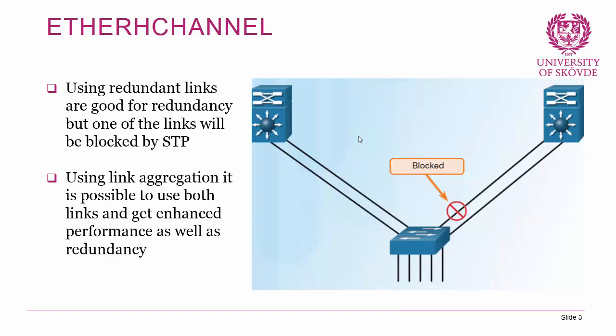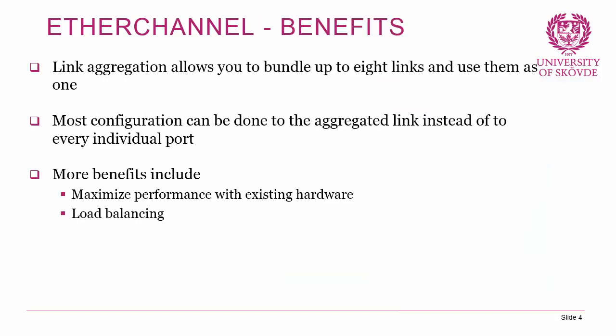What actually happens is that we bundle two or more links together and have them work as one. If one link fails, it's simply removed from the bundle and the remaining links still work. We can bundle up to eight links, configure the aggregated link or port channel as a whole instead of every individual port, and do load balancing — all without STP disabling any links.